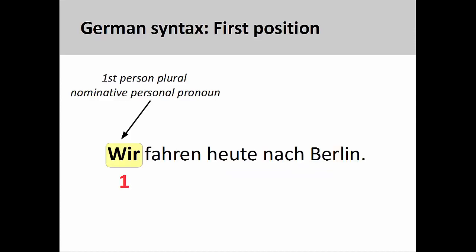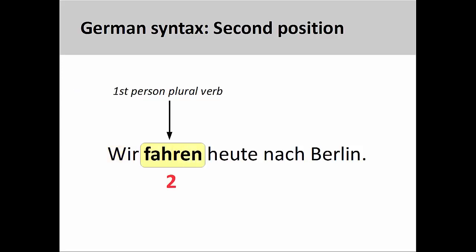German has a similar syntax, although we will see toward the end of this presentation that it is more flexible than English. Here the subject is the first person plural nominative personal pronoun, 'wir' — 'we.' There is no progressive construction in German, so only one verb, the first person plural form of 'fahren' — 'to drive' — is in the second position.